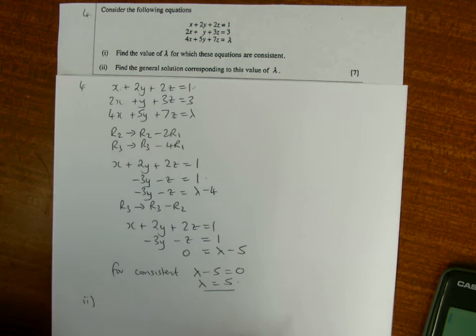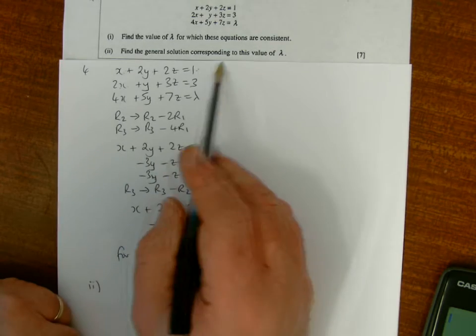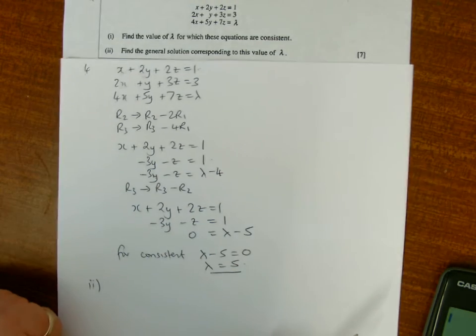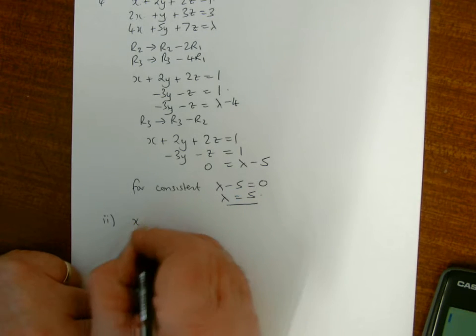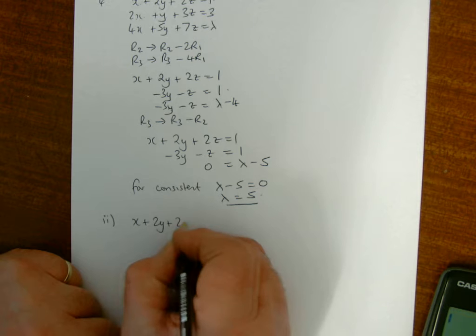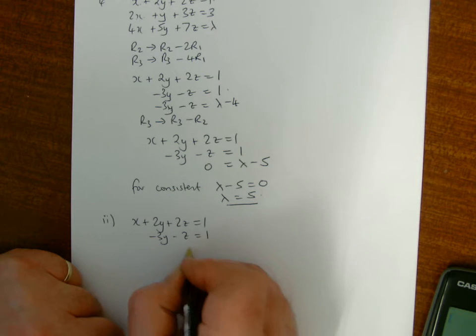And then the second part, I want to find the general solution for this value of lambda. So my equations are now x plus 2y plus 2z is 1, minus 3y minus z equals 1, and 0 equals 0.